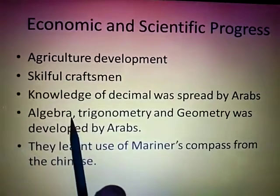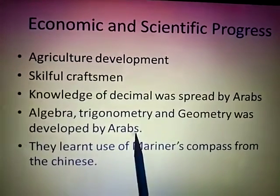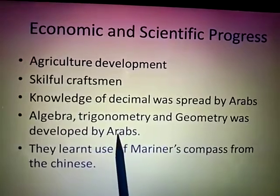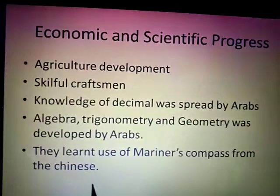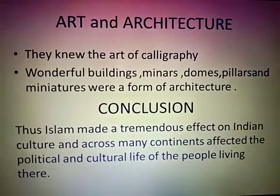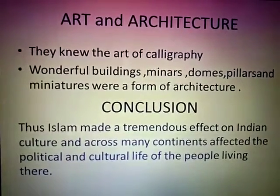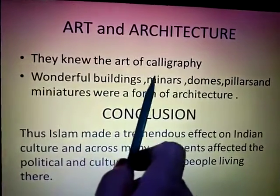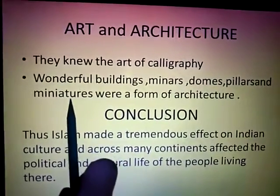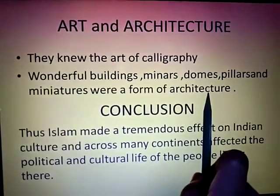The very famous algebra, trigonometry, and geometry in mathematics were also developed by the Arabs. The very famous mariner's compass — the Arabs learnt its use from the Chinese, as they were very skillful. Lastly, in art and architecture, they knew the art of calligraphy and designing, and with that they also designed wonderful buildings, beautiful minarets, domes, beautiful pillars, and miniatures. These all formed part of the architecture of the Arabs' time.